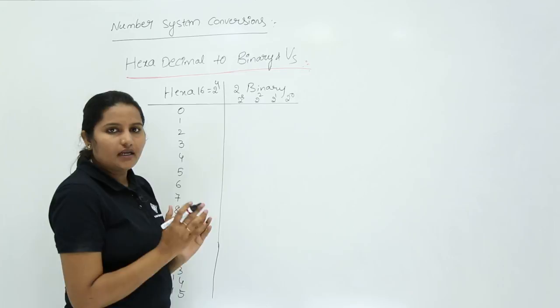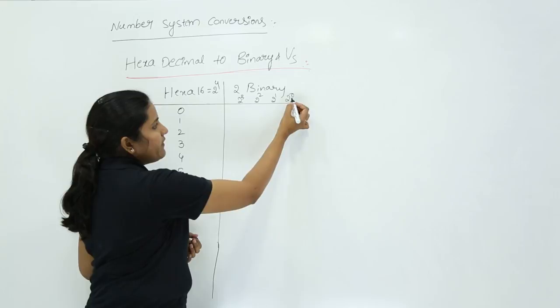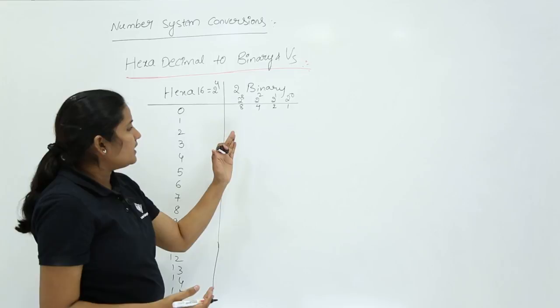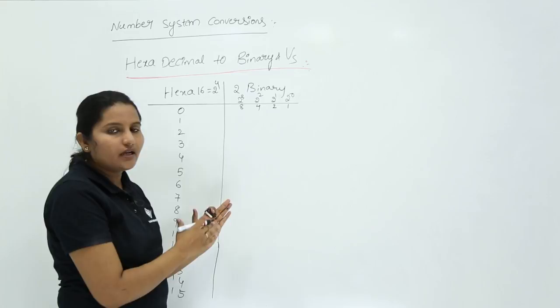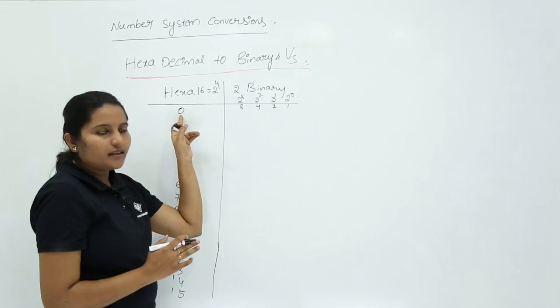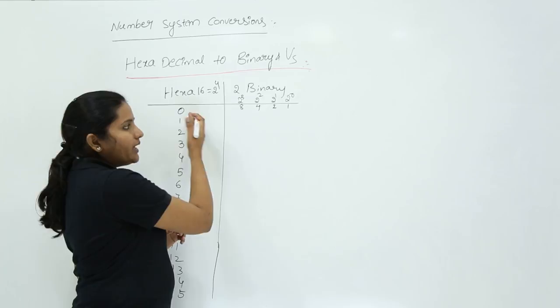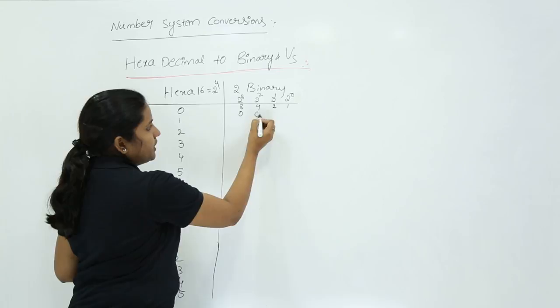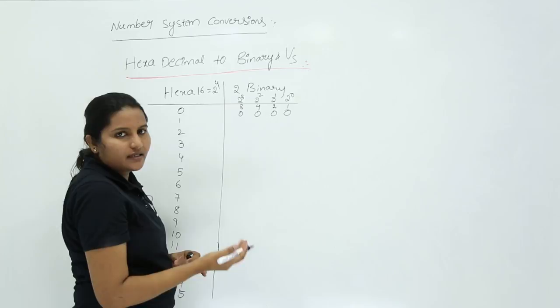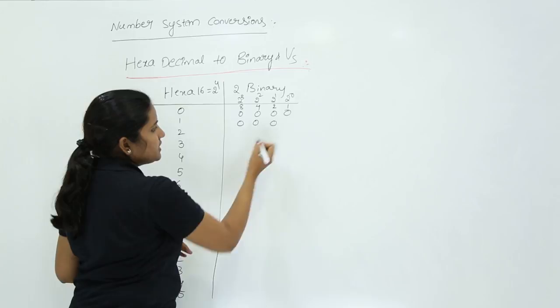That means 4 digits will come on the binary side for each hexadecimal number. 2 power 0 is 1, 2 power 1 is 2, 2 squared is 4, and 2 cubed is 8. So when writing binary for any hexadecimal number, you take the reference of 8-4-2-1. To make 0, all zeros are placed; to make 1, only the 1's place is enabled.